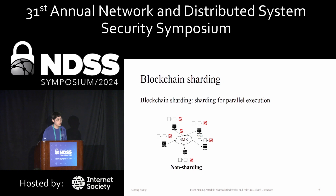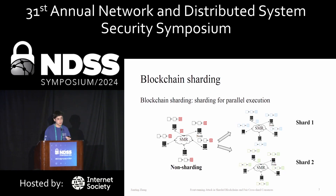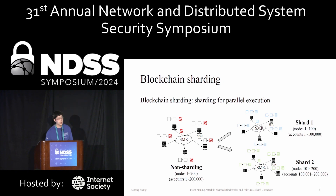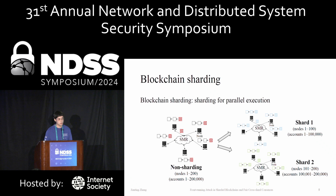Blockchain sharding has been proposed to increase scalability. The idea is simple: instead of asking every node to do the same things — processing all transactions and storing the whole ledger — sharding divides the whole system into multiple groups called shards. Each shard can process transactions in parallel and store different accounts or states. When more nodes join, sharding can create more shards to process transactions in parallel and therefore increase throughput.